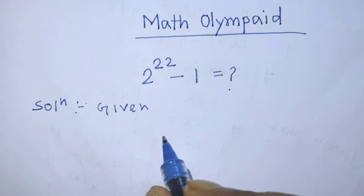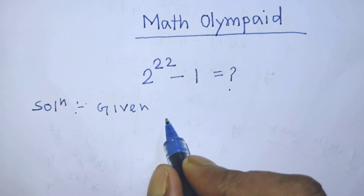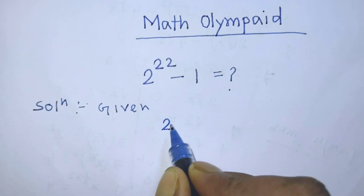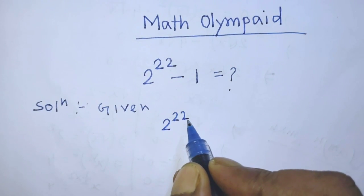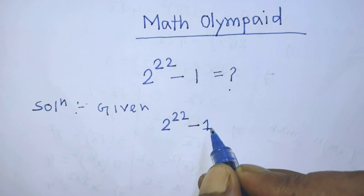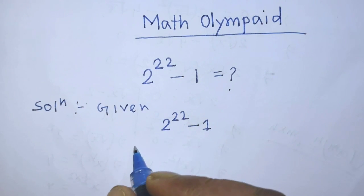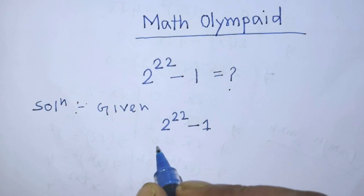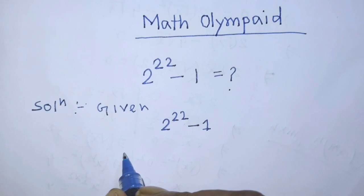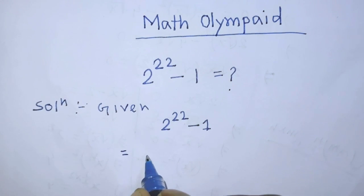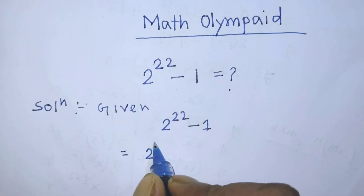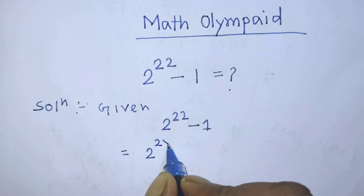Our given algebraic expression is 2 to the power 22 minus 1. In the first step of the solution, we rewrite the exponent as 2 times 11, so it becomes 2 to the power 2 times 11, minus 1.